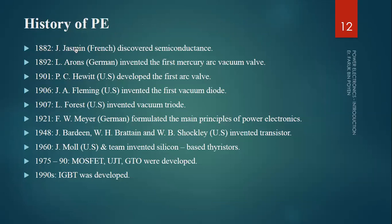In 1882, someone — a French scientist — discovered semiconductance. Then someone from Germany invented the first mercury vacuum valves, developed the first arc valve, and the first vacuum tubes, vacuum diodes, and triodes. We then have a huge list of devices: vacuum diodes, MOSFET, GTO, IGBT, thyristor, transistors — they all fall under the category of power electronics. We also see different types of switches called power electronics switches, with symbols and practical images provided.